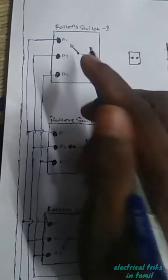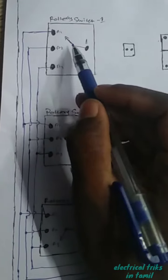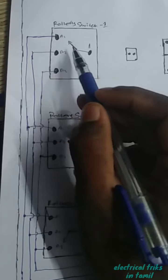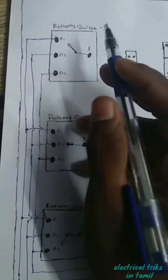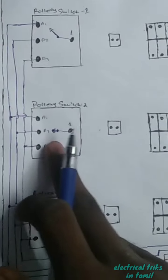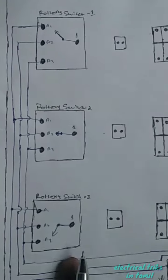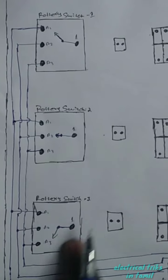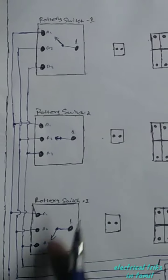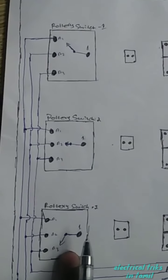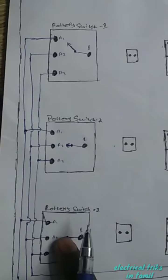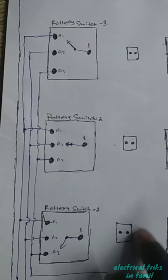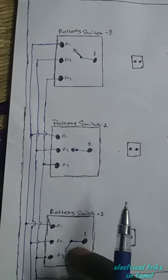Now I have position 1 on the rotary switch. What do I want to do with the rotary switch? The rotary switch goes to position 2 and position 3. I want it to work, but it has to be phased. I have a nice connection.